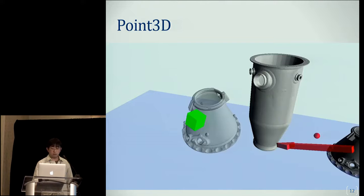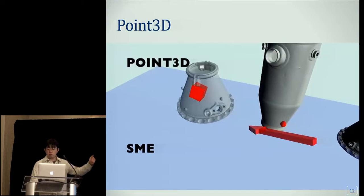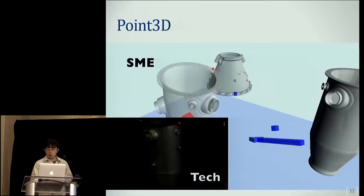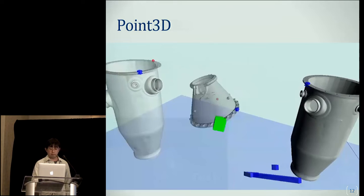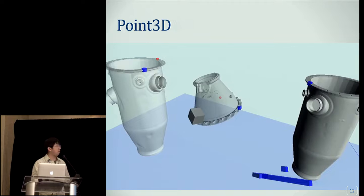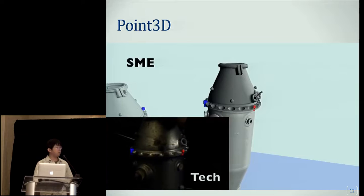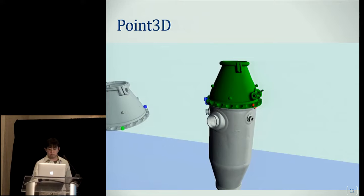In Point3D, the SME manipulates a virtual replica in one hand and specifies the contact points by raycasting from a 3D pointing device held in the other hand. When a contact point is specified, it also appears on the corresponding physical object in the local user's environment. The SME can switch between three different contact points, with contact point color and shape appearing above the 3D arrow. Once the SME specifies a pair of contact points between the top and bottom part, a color-coded rubber band line shows up, and when three pairs of contact points are specified, the local user can figure out how to align the top with the bottom using those visualizations. The SME can specify contact points directly on the virtual proxies, but the virtual replica allows the SME to specify contact points more comfortably from a vantage point.